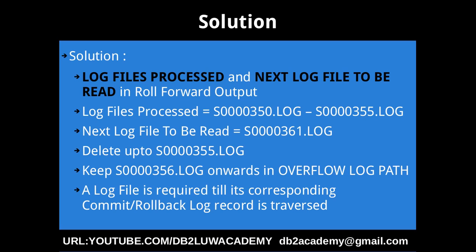This means you can delete up to 355.log, but you have to keep 356 onwards in the overflow log path before issuing another roll forward command. A log file is required in the overflow log path folder until the corresponding commit or rollback log record for its transaction is traversed — that is, until it is replayed. Even though the next log file to be read is 361, you cannot simply delete everything up to 360. It might seem like that but it is not. One log file can have the transaction start point, but the equivalent commit or rollback log record might be 4 or 5 log files later.